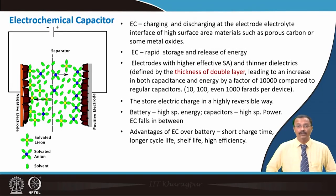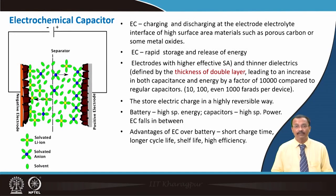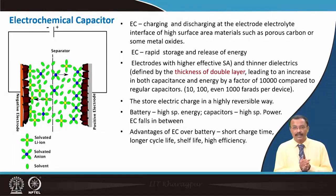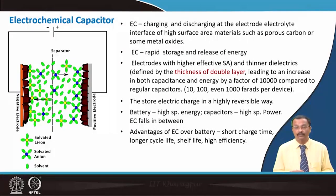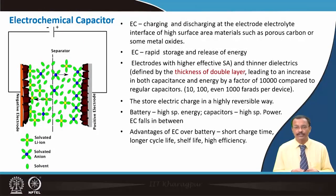This kind of capacitor stores electric charge in a highly reversible way. Batteries have high specific energy; capacitors have high specific power; and electrochemical capacitors fall in between regular capacitors and batteries. Advantages of electrochemical capacitors over batteries include very short charge time, long cycle life, shelf life for stored charge, and high efficiency.